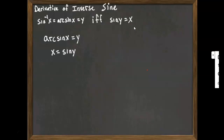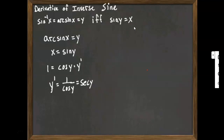We go through and do that. The derivative of x is 1. The derivative of sine of y would be cosine y times y prime by the chain rule. Then we solve for y prime: y prime equals 1 over cosine y, or secant y — you could write it either way. But that answer is in terms of y, and we want our answer to be in terms of x.